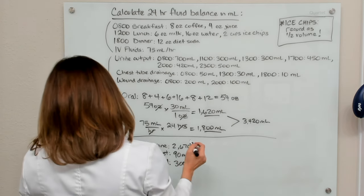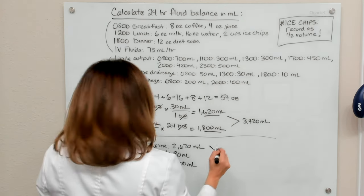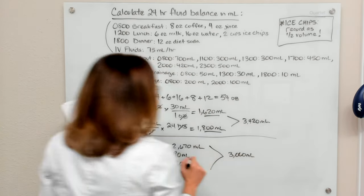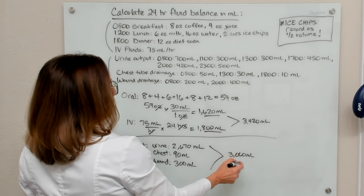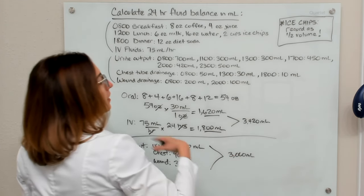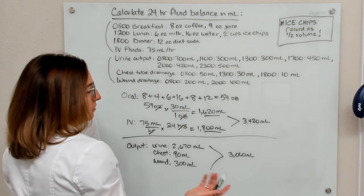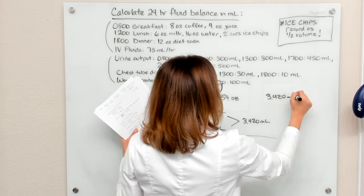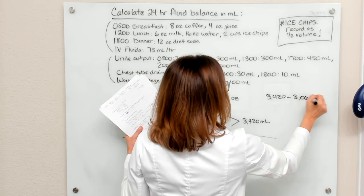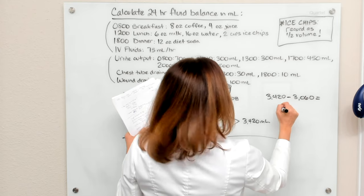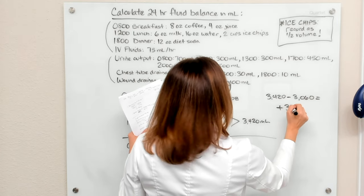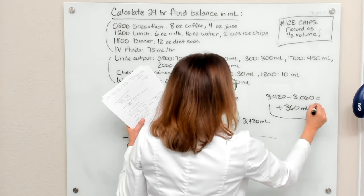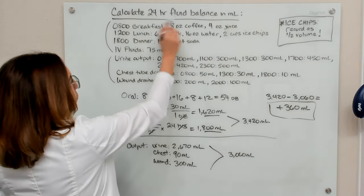So if we add these three things together, we end up with 3,060 mL. That is the patient's output, so intake and output. So to determine the patient's fluid balance, we take the intake and we subtract the output. And that equals a positive fluid balance of 360 mLs. And that is the answer to this question.